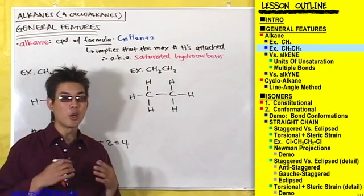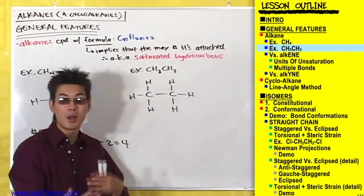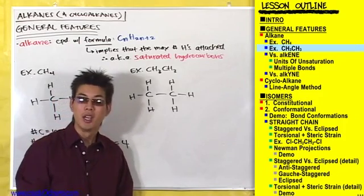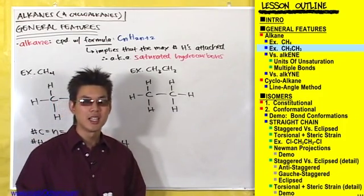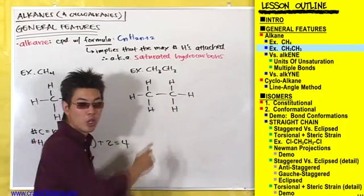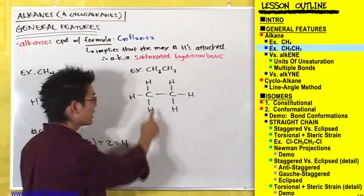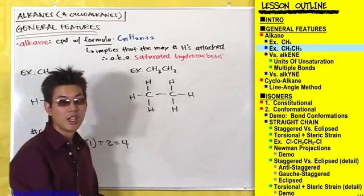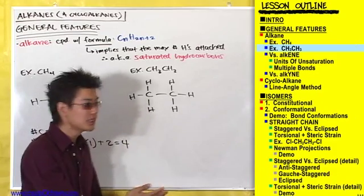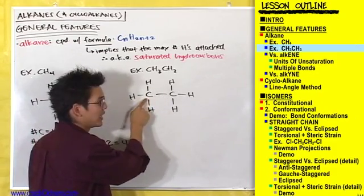This compound also has as many hydrogens attached per carbon as possible — it is a saturated hydrocarbon. Does anybody think there are not as many hydrogens attached to these two carbons as possible? Could we stick another H onto either of these two carbons? No, we couldn't, because those carbons already have four bonds to them — one, two, three, four bonds to each carbon.